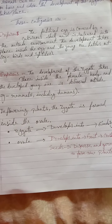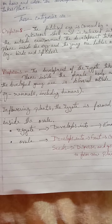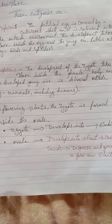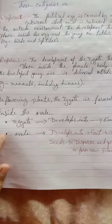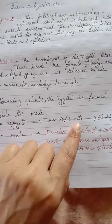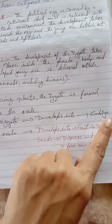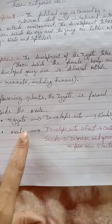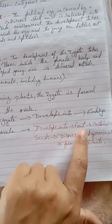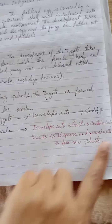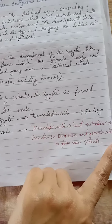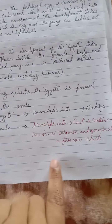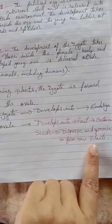In flowering plants, the zygote is formed inside the ovule. The zygote develops into an embryo, the ovule develops into a seed, and the ovary develops into a fruit containing seeds which disperse and germinate to form new plants.